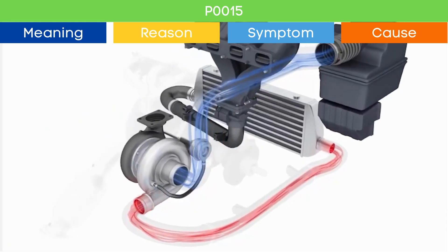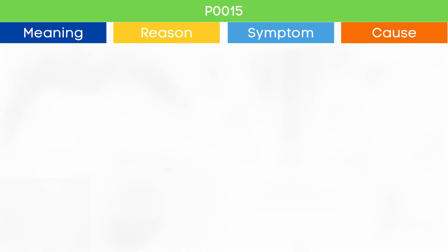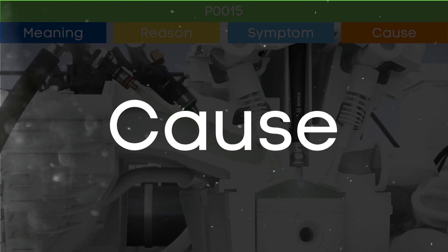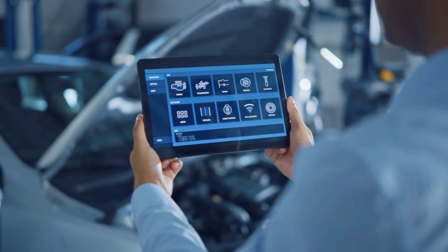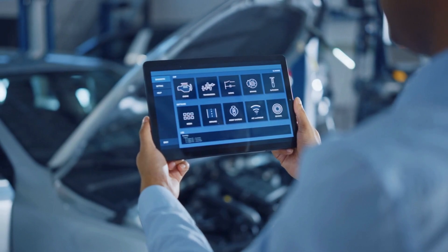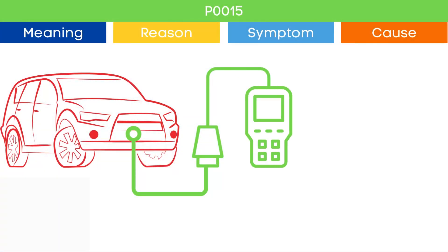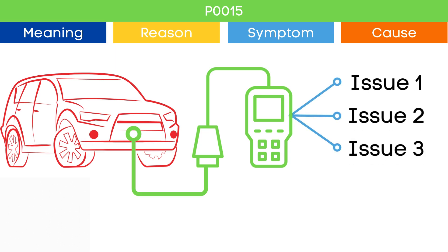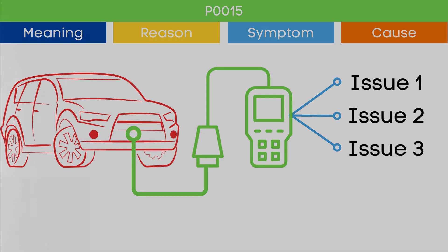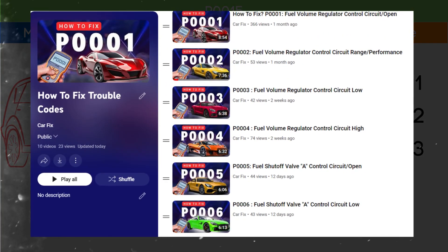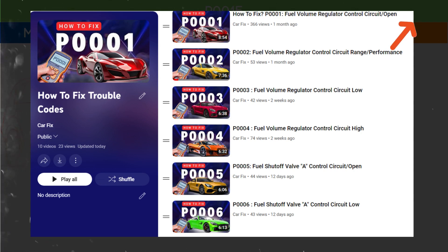Now that we understand the symptoms of P0015, let's delve into the causes. The P0015 code may be triggered due to several causes. To ensure the root cause, check other activated OBD-II codes, as they may indicate malfunctions in other engine management system components that may be the root cause of the P0015 code. You can find our playlist on the meaning and causes of each OBD-II code — the link is in the corner.